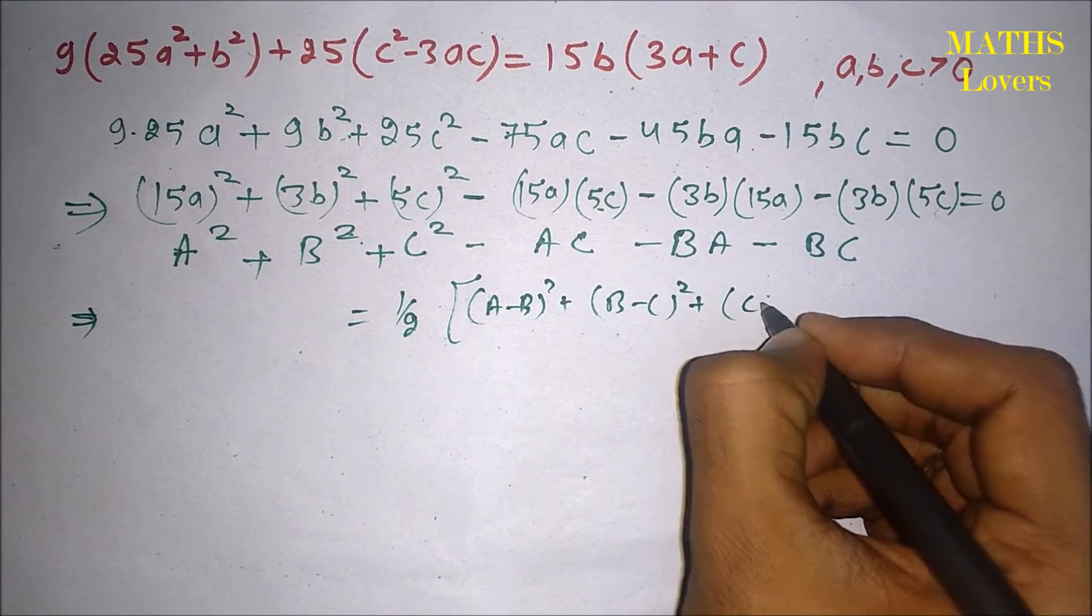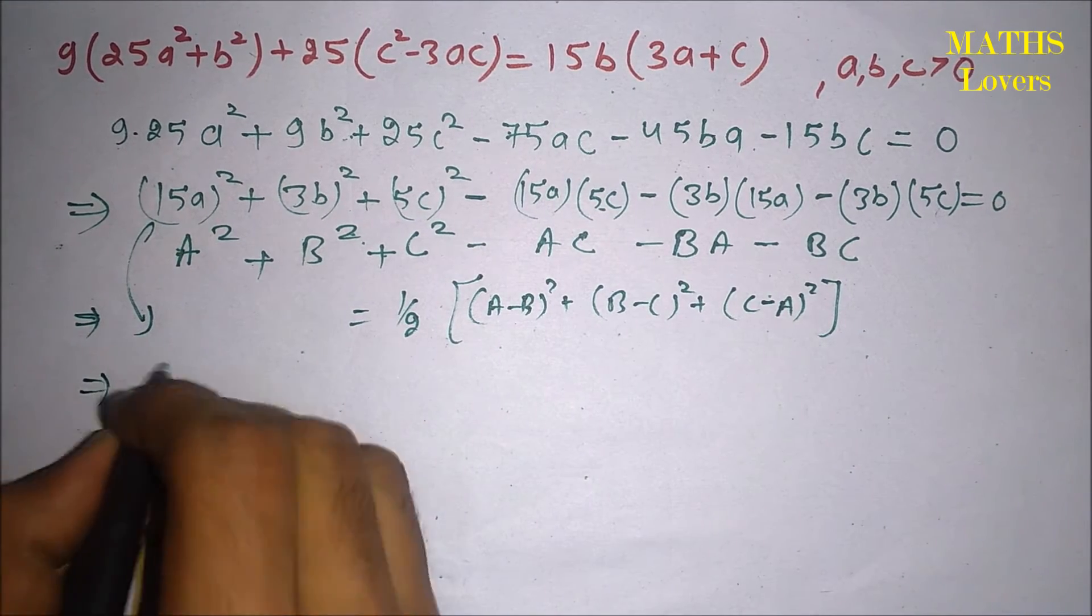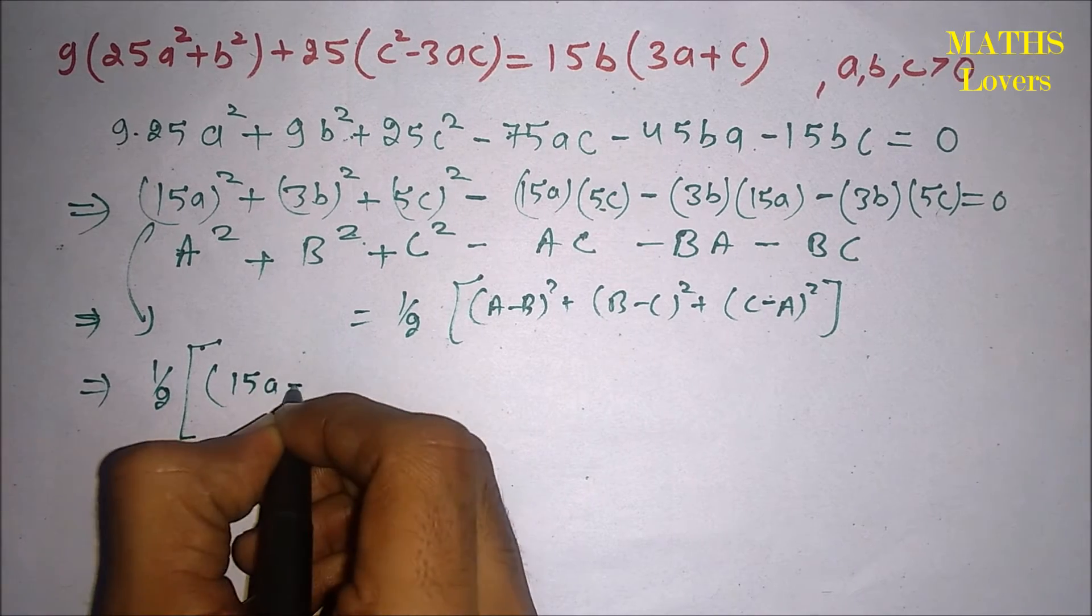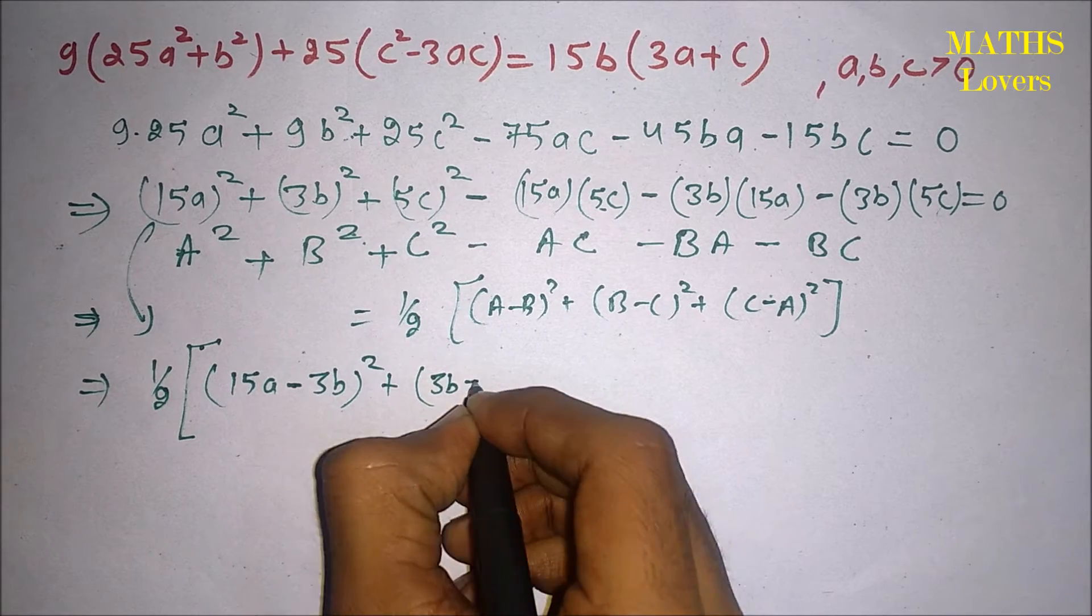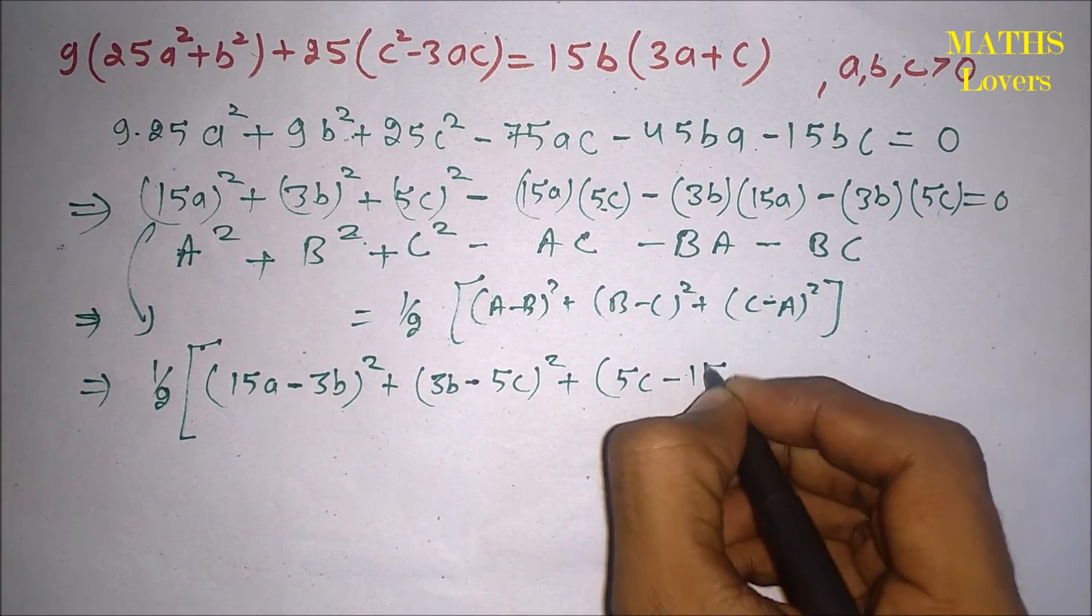minus C)² plus (C minus A)². So we can write it like this: half of (15a minus 3b)² plus (3b minus 5c)² plus (5c minus 15a)²